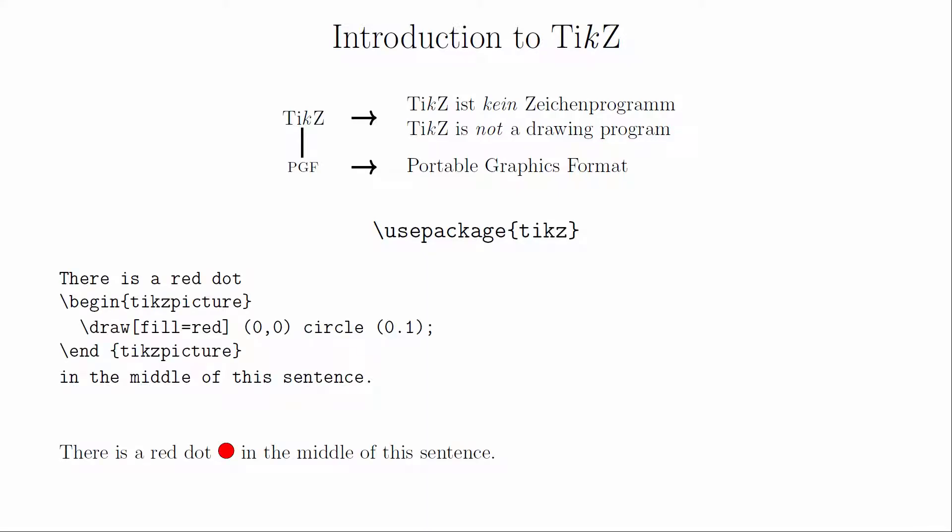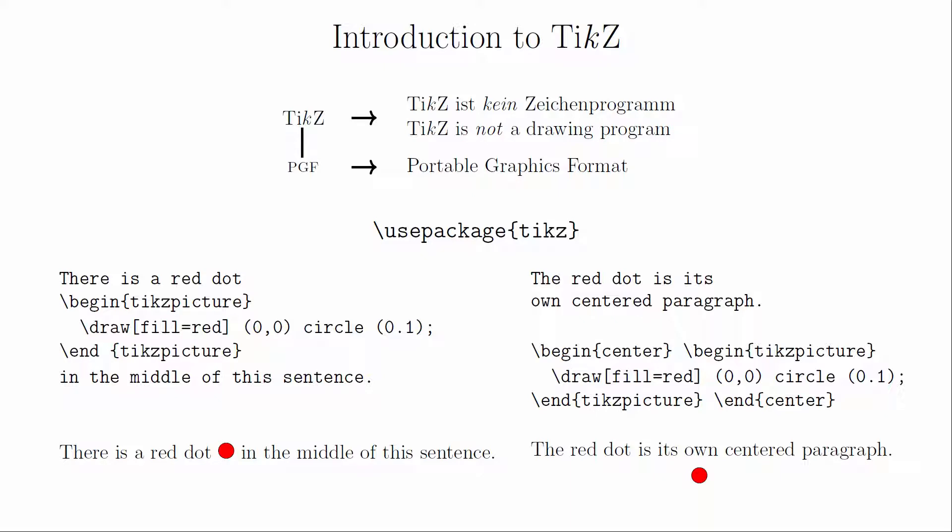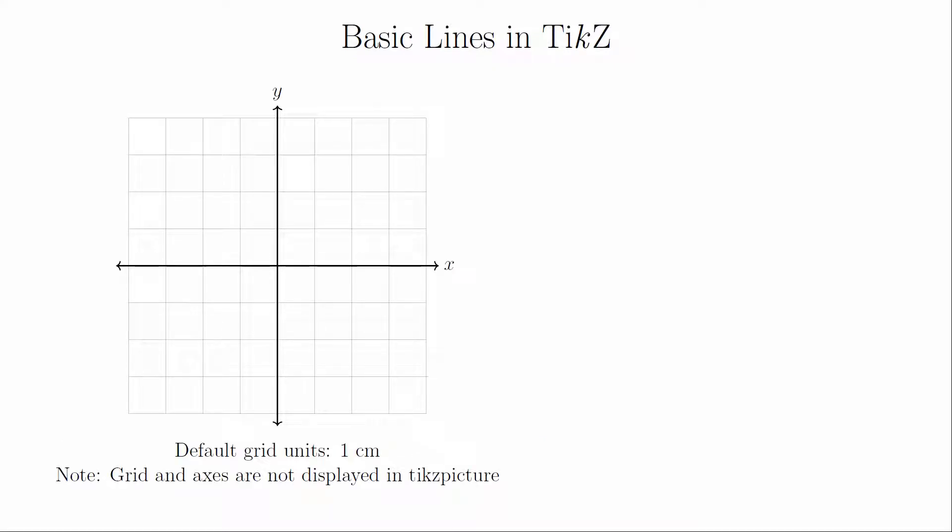The first thing to understand is that a TikZ picture is an inline object. That is, you can put a TikZ picture right in the middle of a paragraph. Most of the time, this isn't what you want to do, and you just put it in its own paragraph. I usually have my drawing centered as well, but that's completely up to you. A TikZ drawing is built around the standard two-dimensional coordinate system, with positive Y values going up. The default unit of measure is centimeters.